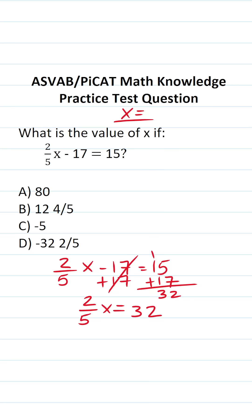So the next thing we want to do is clear this two-fifths in front of x. And to do that, we're going to multiply both sides of the equation by the reciprocal of two-fifths, which is 5 over 2. This crosses out here and here, leaving you with x on this side.